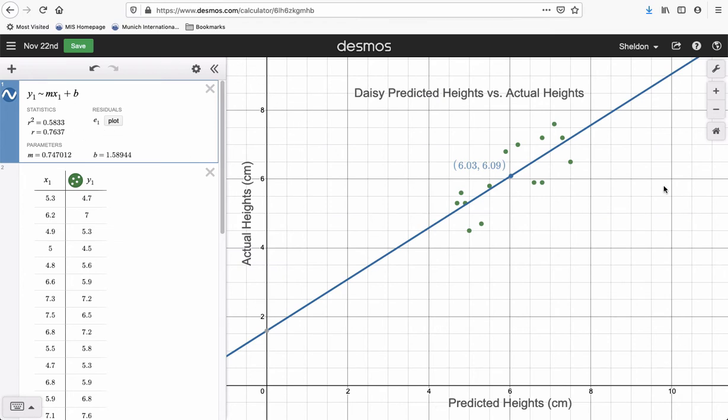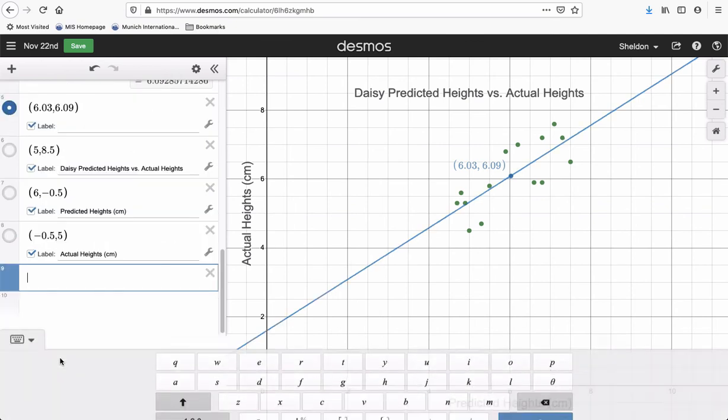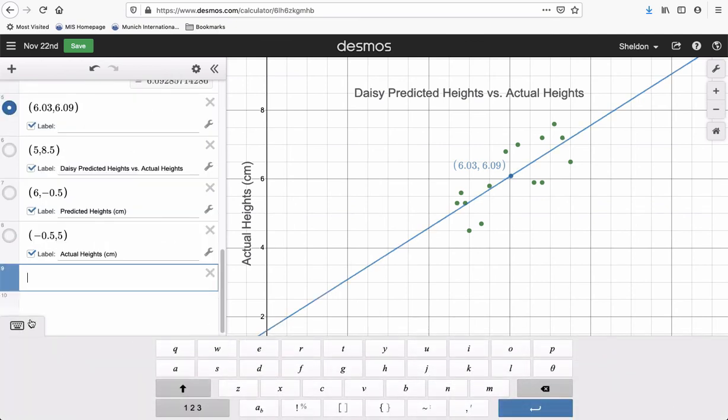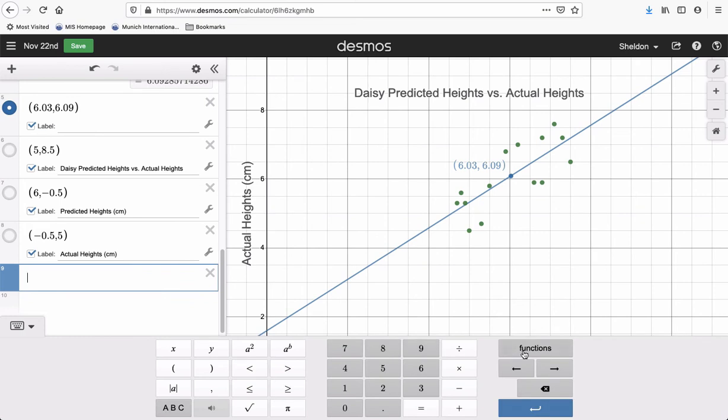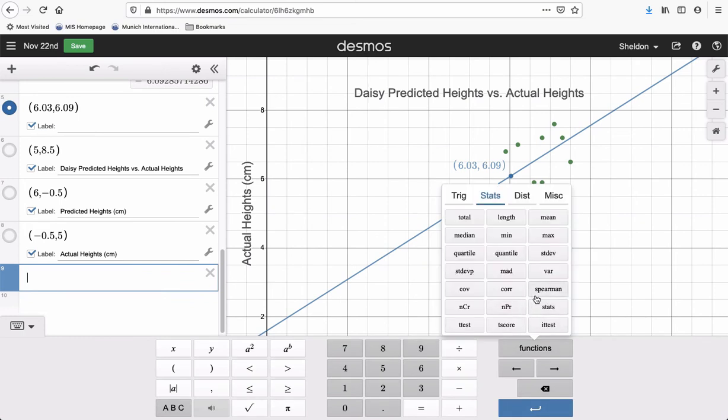You can screenshot it now, it looks ready to go. One more thing you can do is calculate Spearman's correlation coefficient. You can go to this little keyboard, go to functions, and Spearman's is down here.